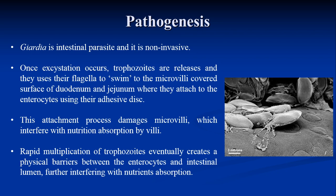Pathogenesis: Giardia is an intestinal parasite; however, it is non-invasive in nature. Once excystation occurs, trophozoites are released and use their flagella to swim to the microvilli-covered surface of the duodenum and jejunum, where they attach to enterocytes using their adhesive disc — a suction-like structure, as seen in this diagram. You can clearly see the concave and convex structure of the organism and how it attaches to the intestinal wall. This attachment process damages microvilli, interfering with nutrient absorption by villi.